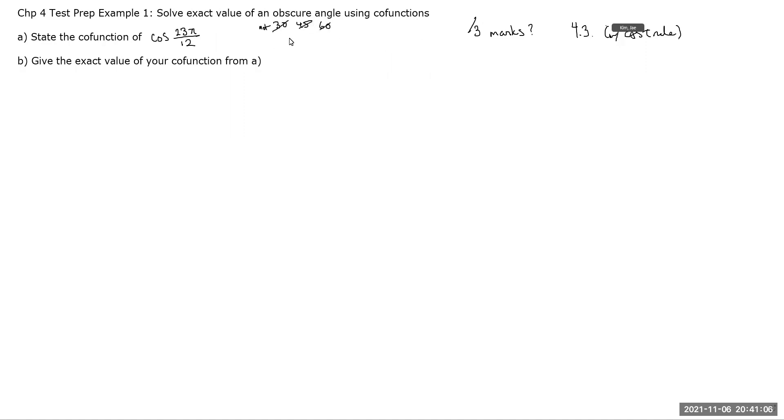and it also asks you to use co-functions to help simplify. Now, 30, 45, 60, throw that out the window, I'm going to start using pi over 6, pi over 4, and pi over 3, so get used to it.